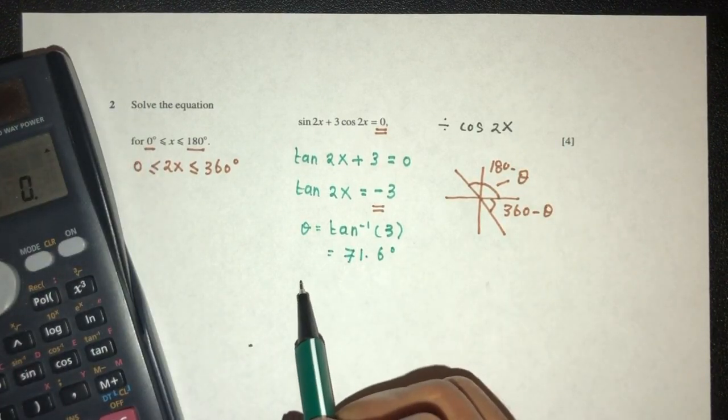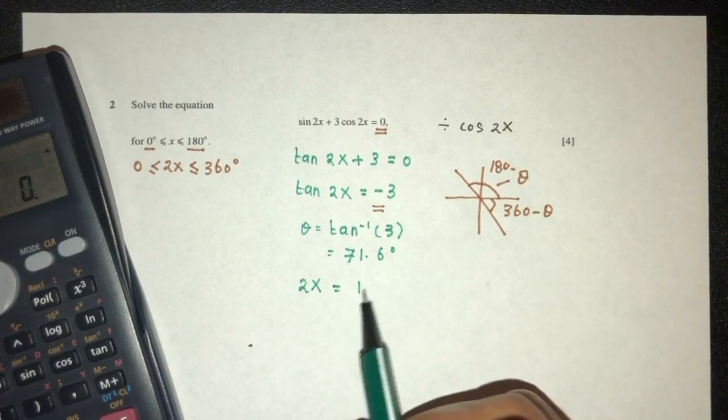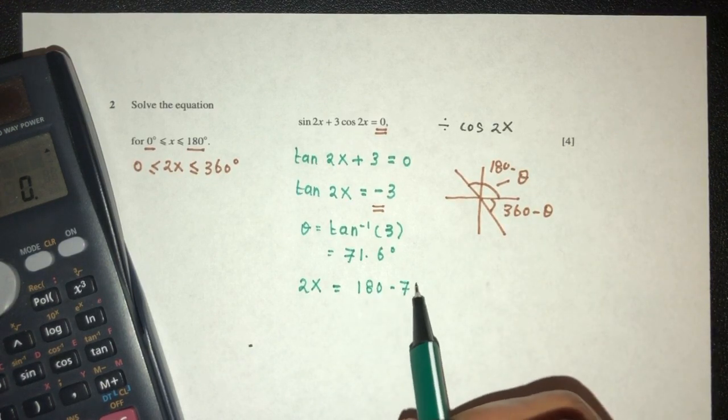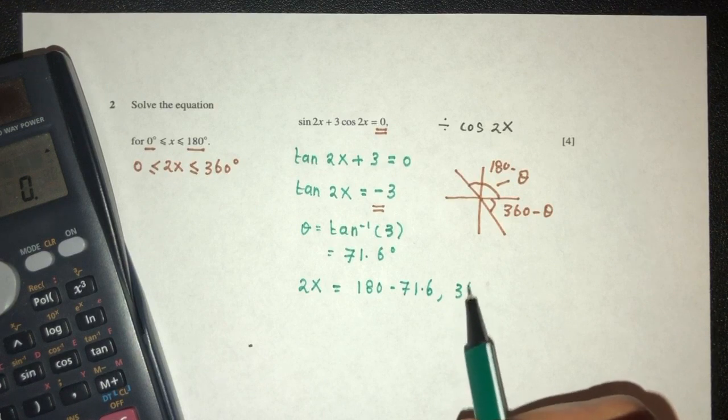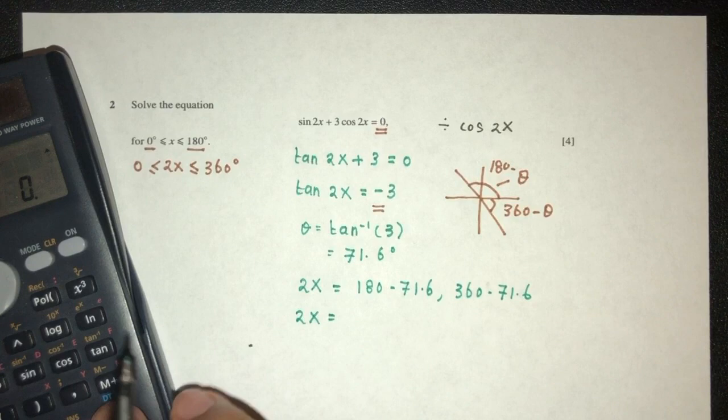Now to find the value of 2x, because here we have 2x, 2x is equal to 180 minus theta and 360 minus theta. So 2x will be what? Let's find out.